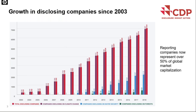Looking back, it's incredible to see where we've come from. In 2003 there were just over 200 companies reporting to CDP on climate change, and now in 2018 we've got over 7,000 companies disclosing on climate change, water security and forests. Reporting companies now represent over 50% of global market capitalisation and CDP's platform has become one of the richest sources of information globally on how companies and governance are driving environmental change.